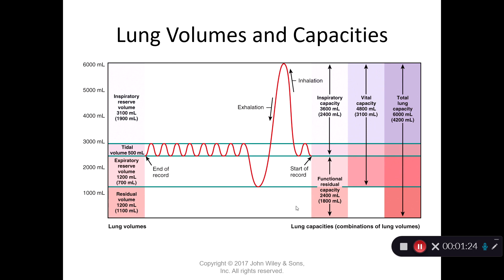Everything else you can control besides residual volume — you can't get rid of residual volume. Everything else that you can move inside your lungs is called the vital capacity. Vital means necessary for life. This vital capacity is how much your lungs are able to push air in or push air out.